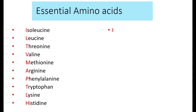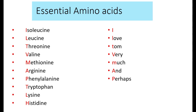The trick to memorize essential amino acids is: 'I Love Tom Very Much And Perhaps Tom Loves Him.' I for isoleucine, L for leucine, T for threonine, V for valine, M for methionine, A for arginine, P for phenylalanine, T for tryptophan, L for lysine, and H for histidine. So the trick is: 'I love Tom very much, and perhaps Tom loves him.'